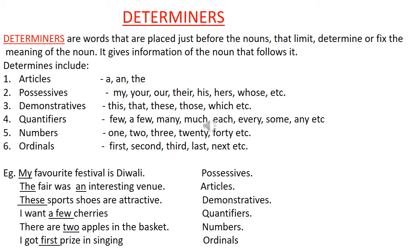Demonstrators: this, that, these, those, which, etc. Quantifiers: few, a few, many, much, each, every, some, any, etc. — quantifiers show the quantity. Numbers: 1, 2, 3, 30, 40, etc. — which tell about numbers. Ordinals: first, second, third, last, next, etc.